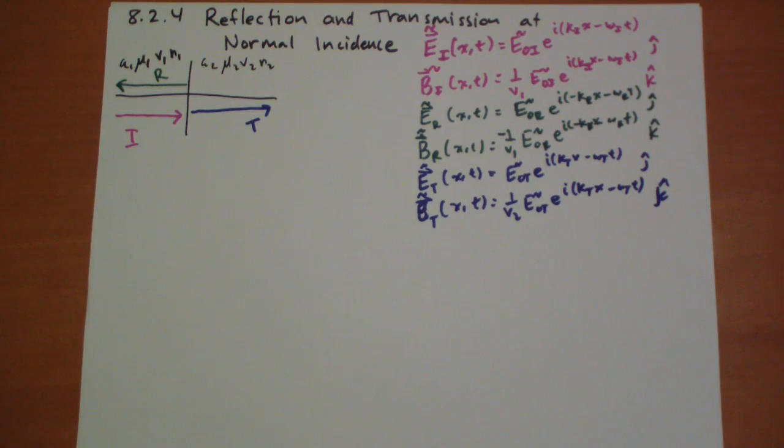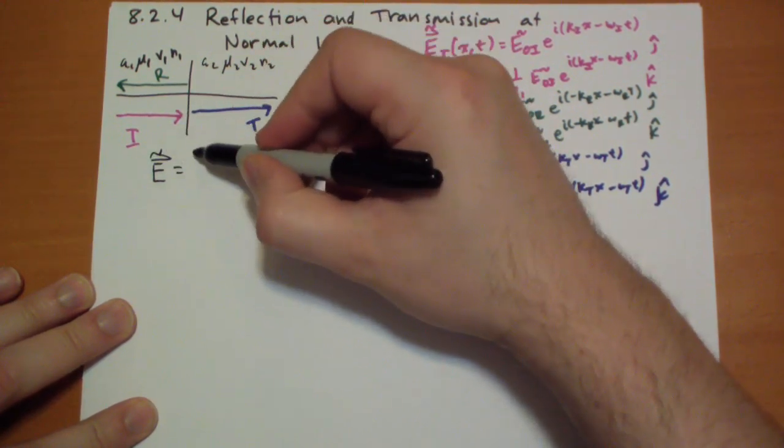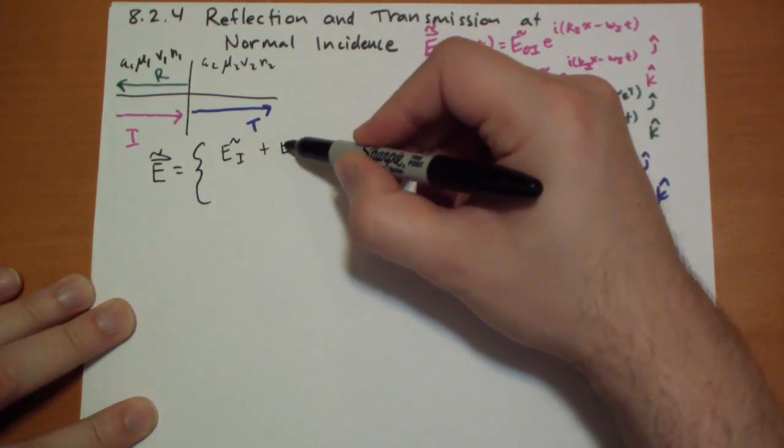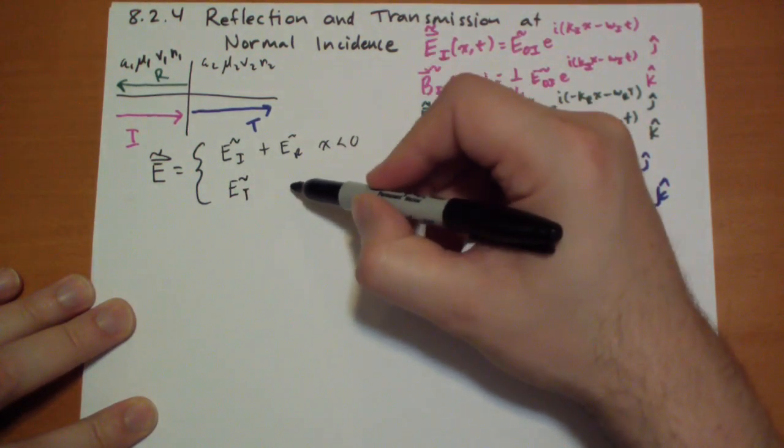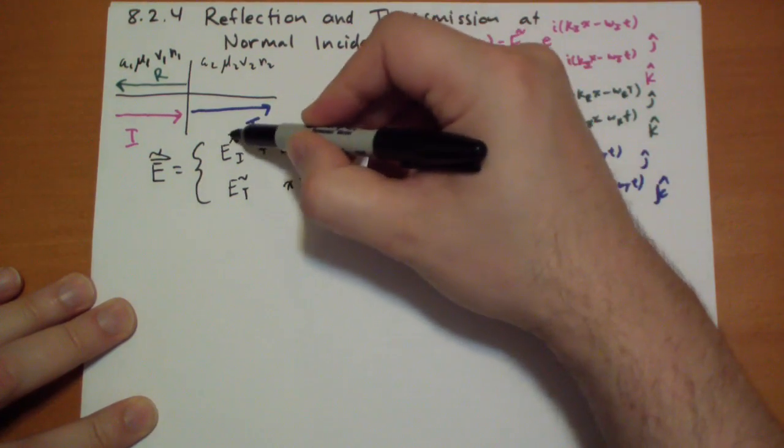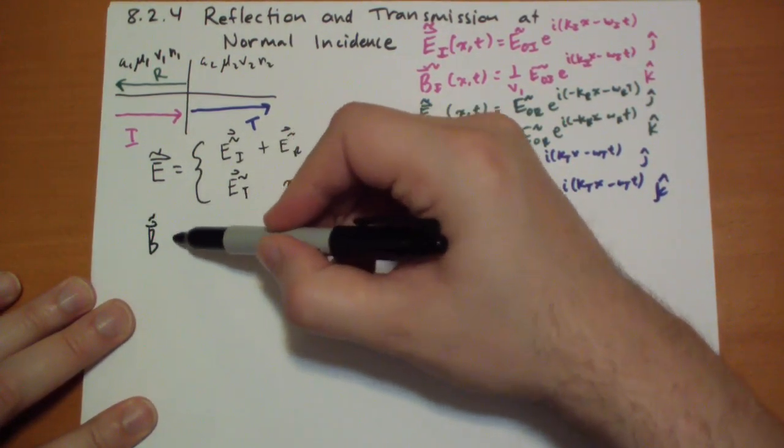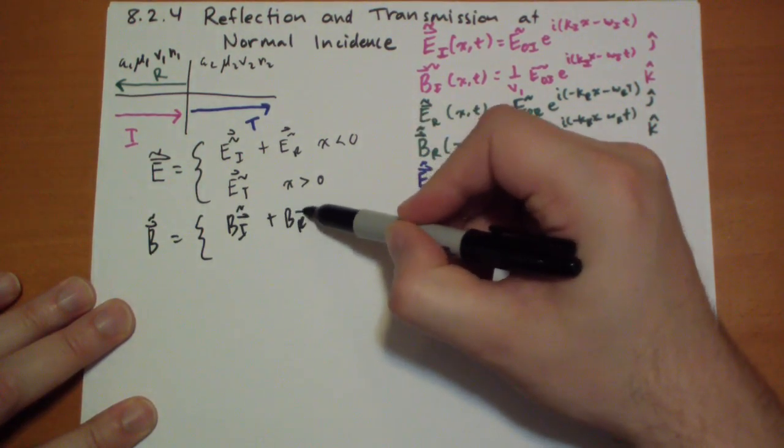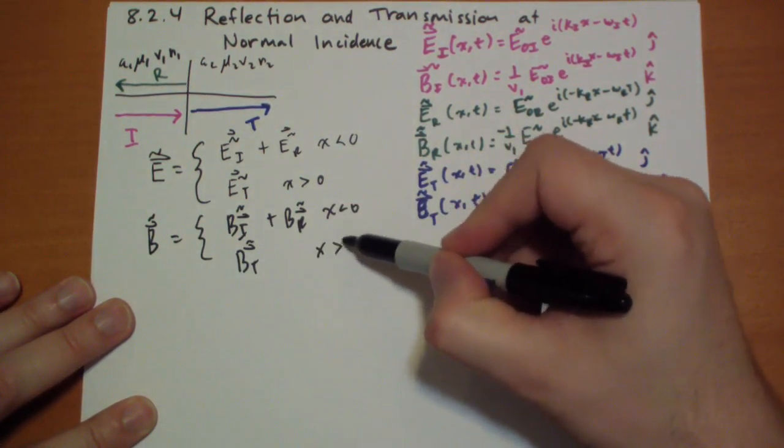Now the total electric field is basically the incident electric field plus the reflected electric field when x is less than 0, and it's going to be the transmitted electric field when x is greater than 0. These are vectors. And the same for the B field.